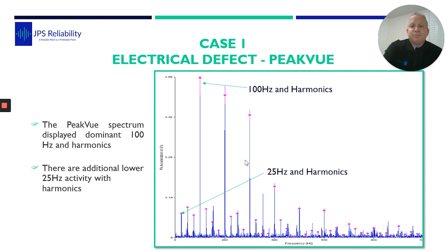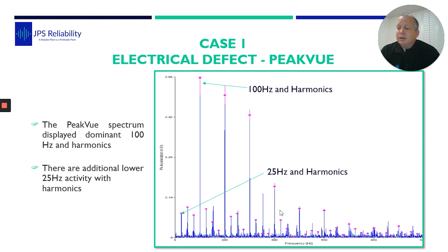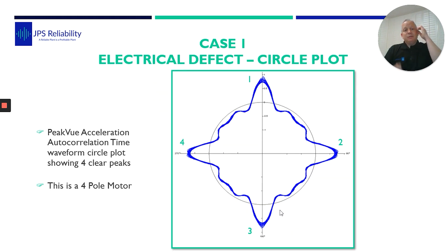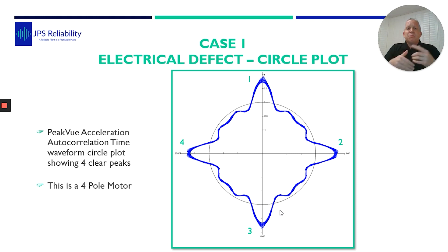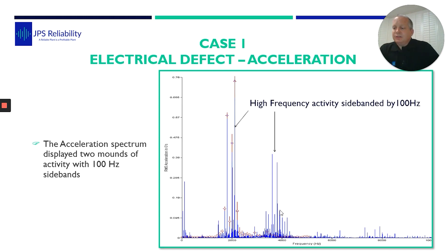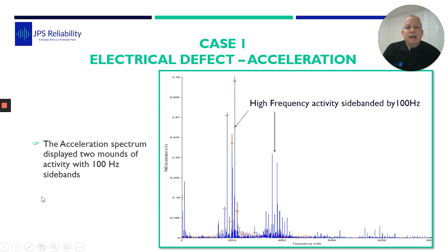But this was the change in the pattern. In the velocity spectrum, we can see what wasn't there before — a 100 hertz component. And in the PeakVue data we have lots of 100 hertz series and also 25 hertz harmonics. To look at the data differently, we put in a circular plot. We ensured the RPM was spot on — 100%. The circular plot showed there are four pulses per rotation of the shaft. Coincidentally, it's a four-pole motor. This is the acceleration data, where we have two mounds of activity side-banded by 100 hertz.